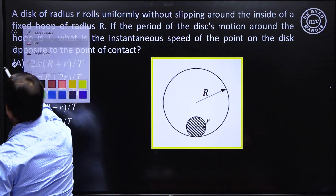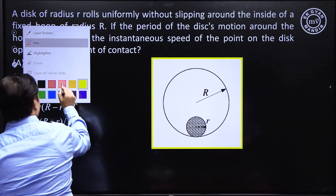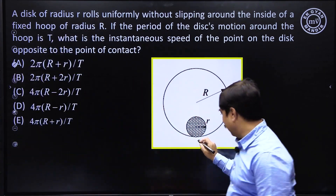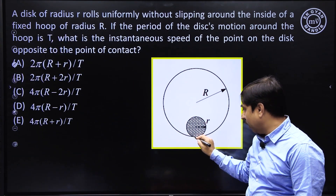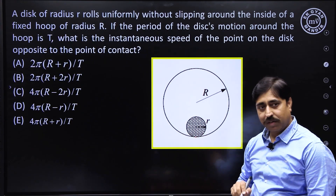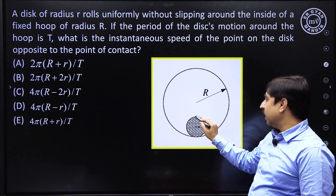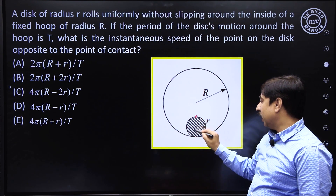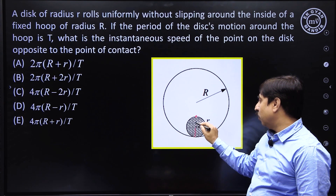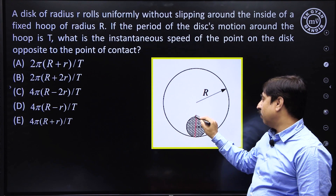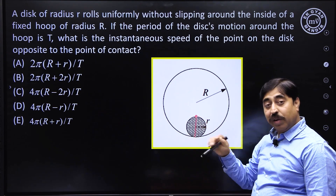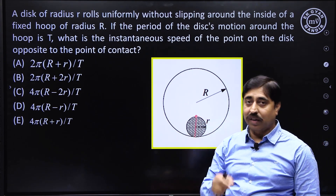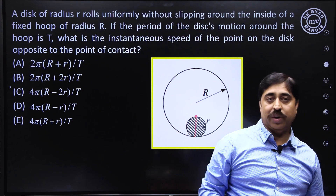Now, the question is asking: if this is the point of contact, then what is the instantaneous speed of the point directly opposite to the point of contact? What is the speed of this point of the disk? That is the question.